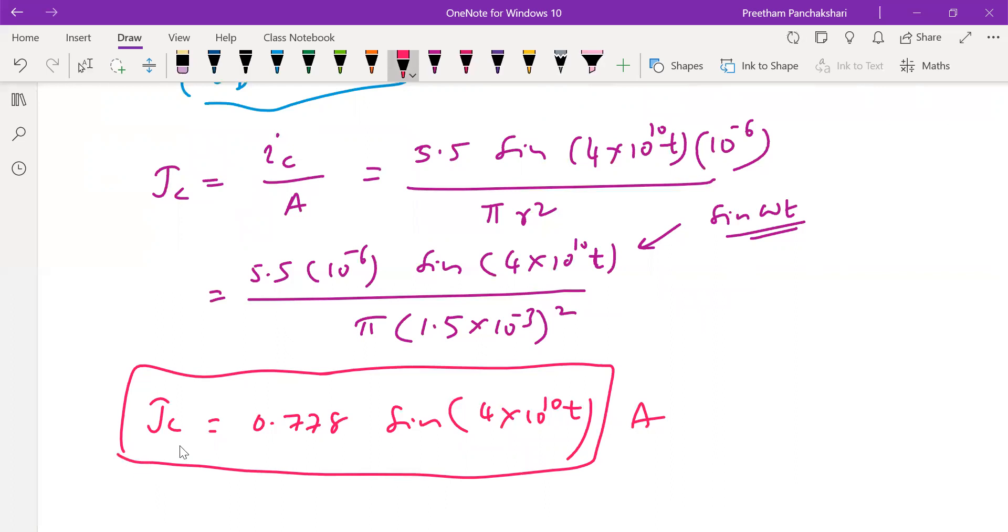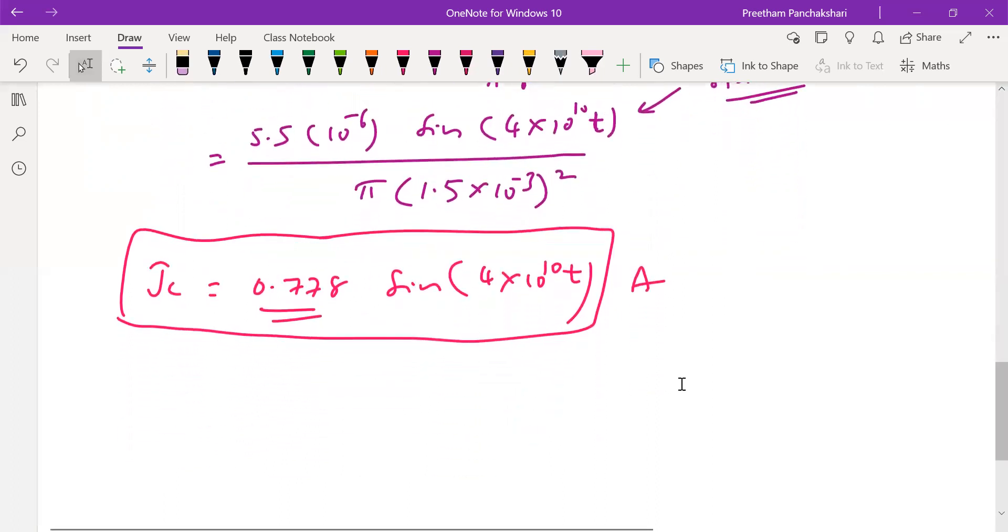That's about Jc, but Jc is not required. What is required is amplitude of Jd. So for that we can use amplitude of Jc. Amplitude of Jc is 0.778 amps. If you find displacement current density from Jc, definitely it will be cosine because of the 90 degree phase shift.